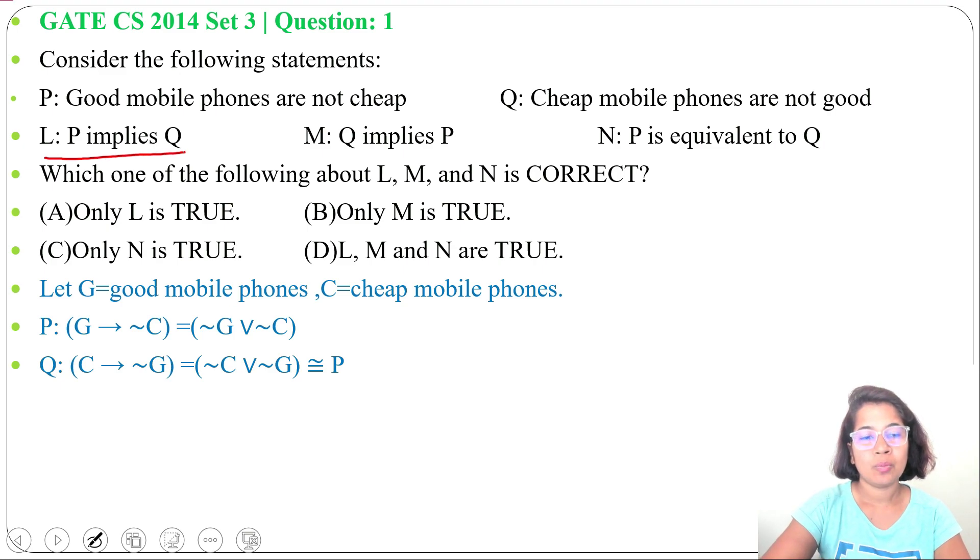Now L: P implies Q. Both have same truth value, so P implies Q will be true. If P is true and Q is true, true implies true will be true. When P is false and Q is false, false implies false will be true. As both have same truth value, both are logically equivalent, so their implication will be true.